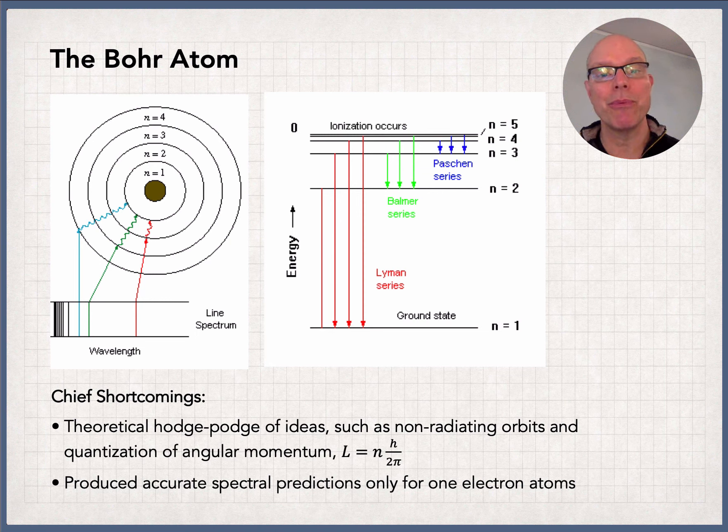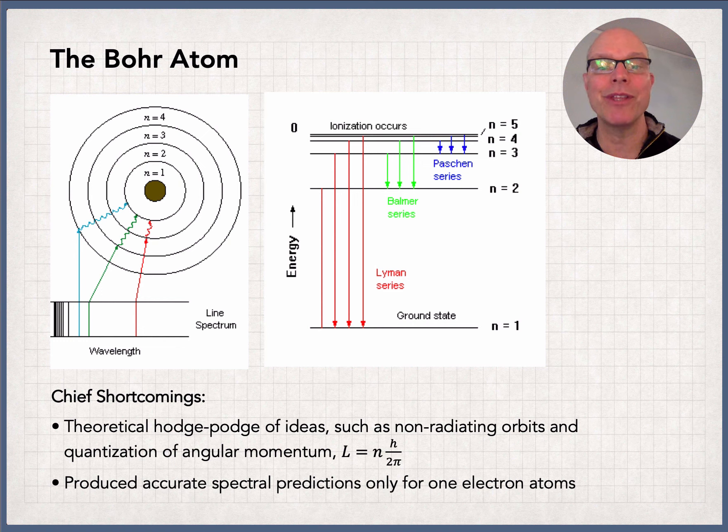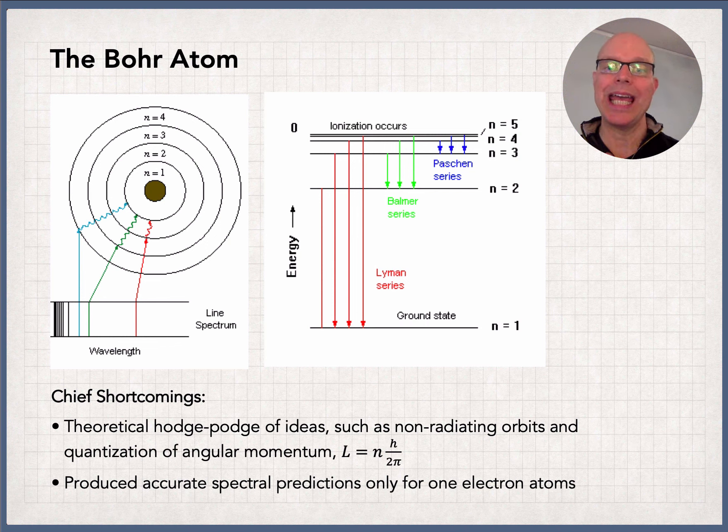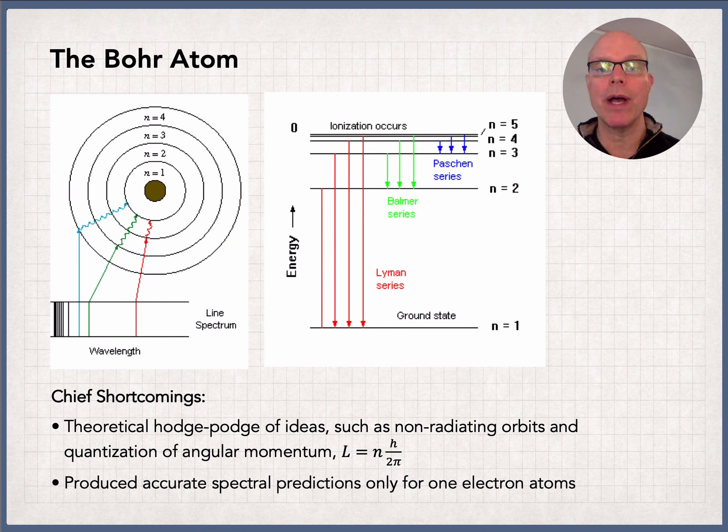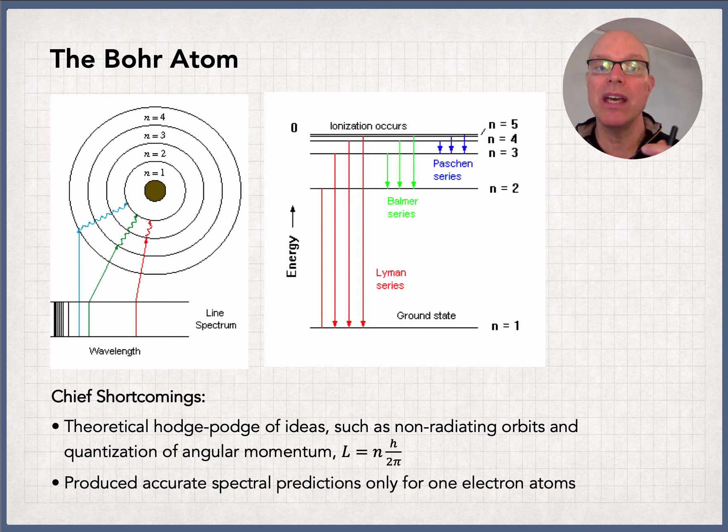The first thing to recognize about the Bohr model of the atom is that it's never selling itself as something that it's not. A model in science is an idea that gets the key thing right. A theory is a much bigger, more comprehensive thing that's expected to do a lot more. The Bohr model of the atom was just trying to capture how do we get line spectra and explain how atoms can exist. And it did that.